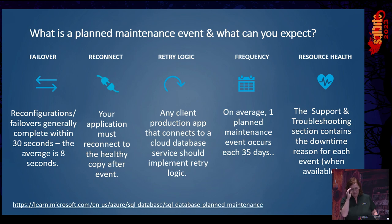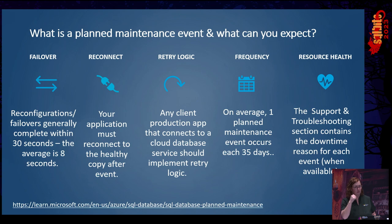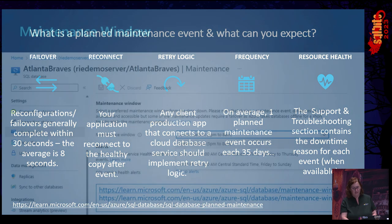Planned maintenance events occur about every 35 days, so you can expect roughly one failover per month. We try very hard to package things together so you don't have more than one a month, though sometimes a critical patch means it happens sooner. We also try hard to fit everything into one window. Maintenance windows will only happen during either the window you select or the default window if you didn't select one.